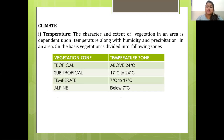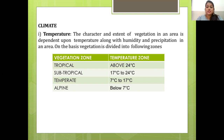The second factor is climate, specifically temperature. The character and extent of vegetation in an area is dependent upon temperature along with humidity and precipitation. On the basis of vegetation, it is divided into the following zones: tropical, subtropical, temperate and alpine, with temperatures varying accordingly.